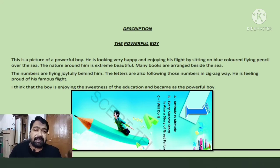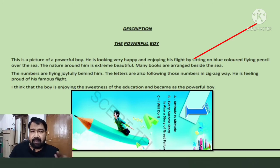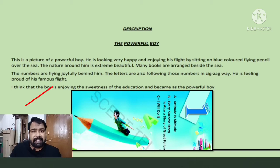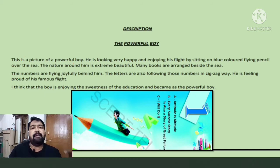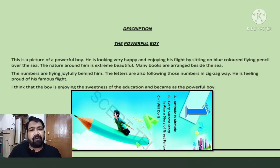My dear children, did you observe what I did in describing this picture? The first paragraph is about the setting or scene. The second paragraph is about the action taking place in the scene. The third is the conclusion. By these three things — scenic details, action details, and conclusion — we can easily describe any picture, and not only pictures but everything.